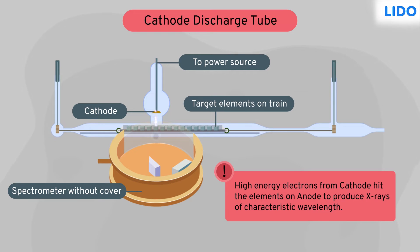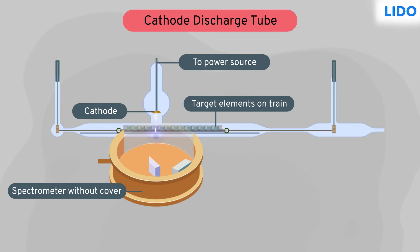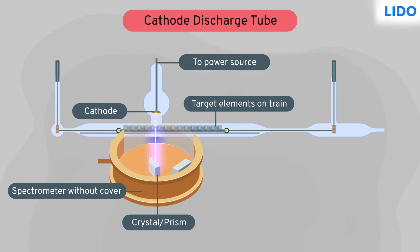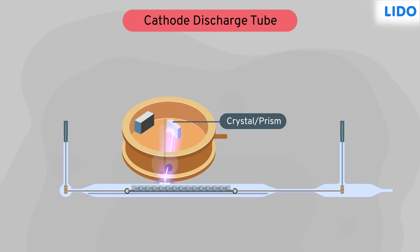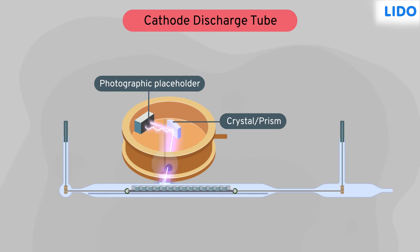These X-rays were specific for each element, just like human fingerprints. He further passed this X-ray through a prism to disperse it and noted the wavelength of the rays emitted by different elements. He recorded the reflection of the wavelengths on a photographic film and interpreted the lines as unique for every element.